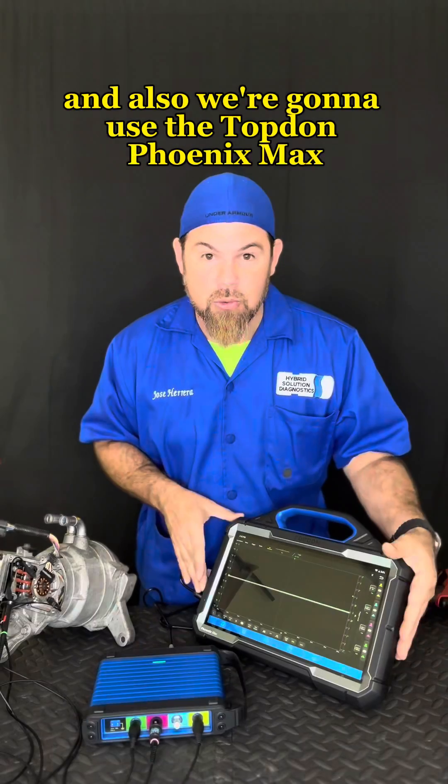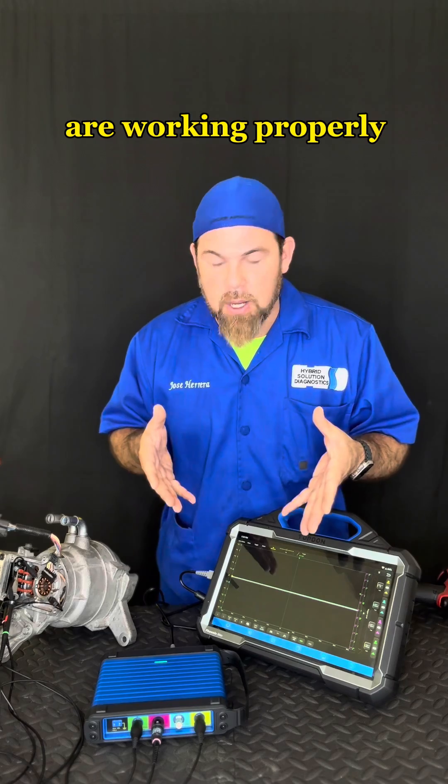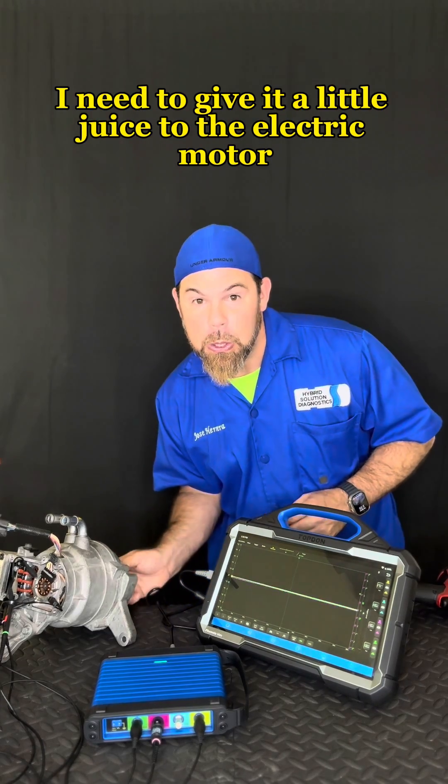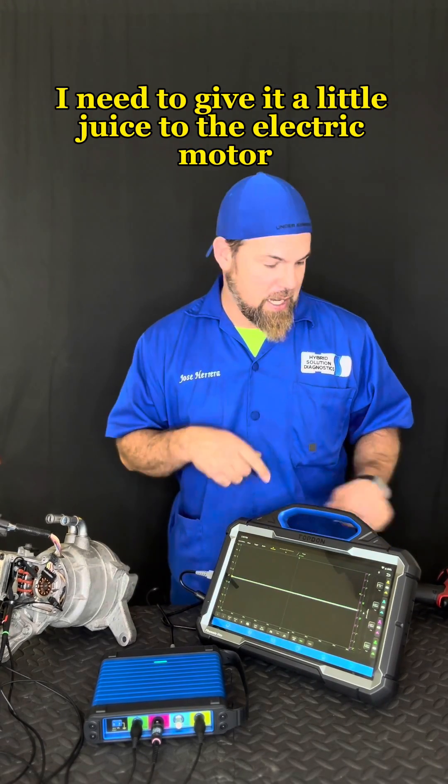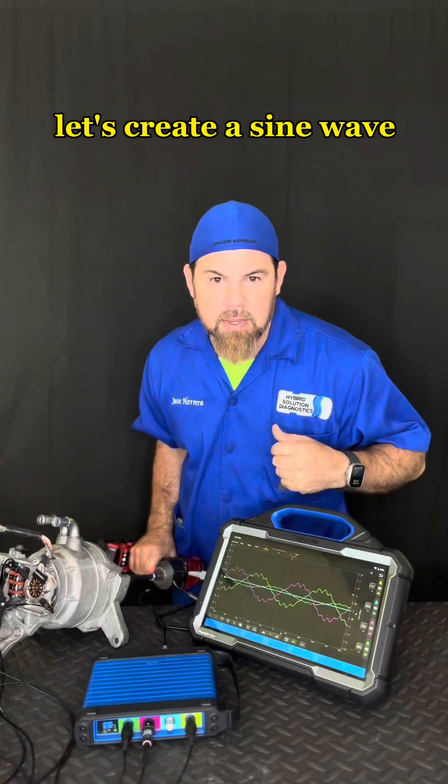I already set up the oscilloscope and we're going to use the Topdon Phoenix Max. In order to find out if the phases are working properly, I need to give it a little juice to the electric motor. Now watch the screen and let's see what's happening. Here we go, let's create a sine wave.